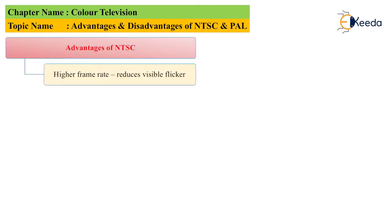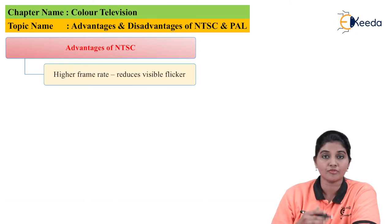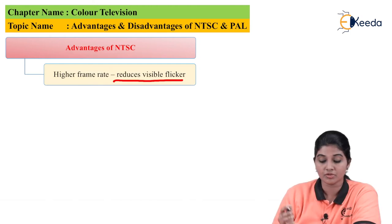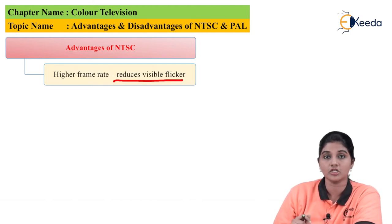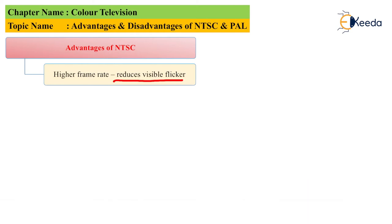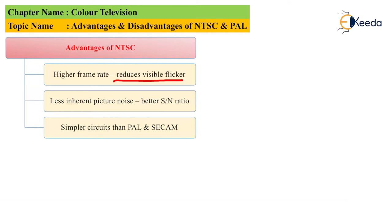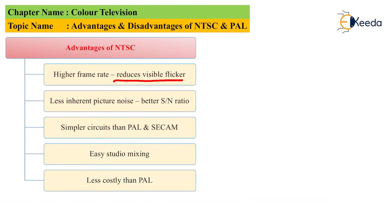The first advantage is the high frame rate — it provides a frame rate of 30 frames per second because it uses a frequency of 60 hertz — which results in a reduction of the flickering effect. Reduced visible flicker is considered one of the most important advantages of the NTSC system. The next advantage is less inherent picture noise, which results in a better signal-to-noise ratio. The circuit is simpler as compared to PAL and SECAM. Easy studio mixing is also possible with NTSC, and it is less costly as compared to the PAL system.